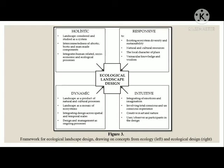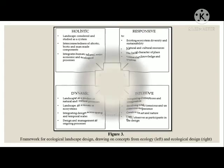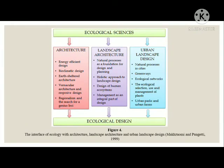In this figure, we can see the framework of ecological landscape design, drawing on concepts from ecology on the left and ecological design on the right — holistic, dynamic, responsive, intuitive. All of these points fall under ecological landscape design. In Figure 4, ecological science, architecture, landscape architecture, and urban landscape design all lead to ecological design. When arranged with energy efficiency — for example, natural processes in the city, greenways, ecological networks, ecological selection and management of plants, urban parks, and urban frames — all of these points contribute to and make ecological design, increasing a good and livable environment.